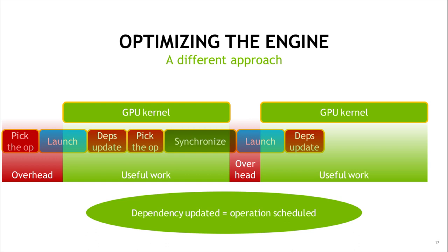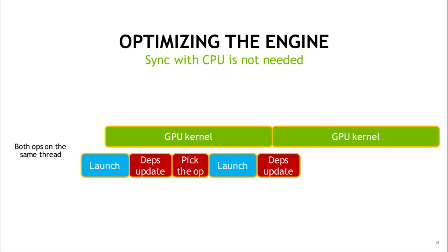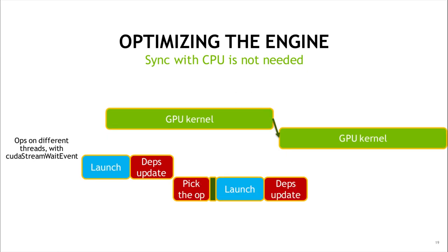We can do even better. Let's consider two cases. In the first one, both operations end up being launched by the same worker Fred. Since both are scheduled to the same GPU stream, the work is automatically serialized and we do not actually need to perform any synchronization with the host CPU. In the second case, the operations are launched by two different threads. In this case, we can use the CUDA events mechanism in order to keep the proper ordering of execution while still avoiding synchronization of the host. This will enable a much better overlap of the CPU and GPU work, effectively eliminating most of the engine overheads, even in the case of imperative execution.